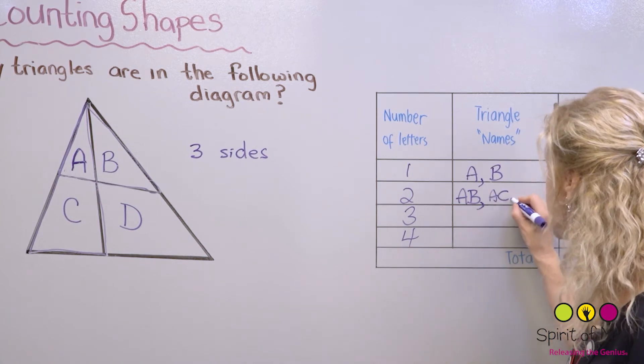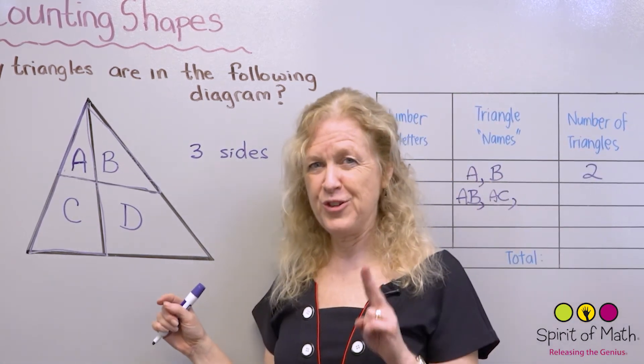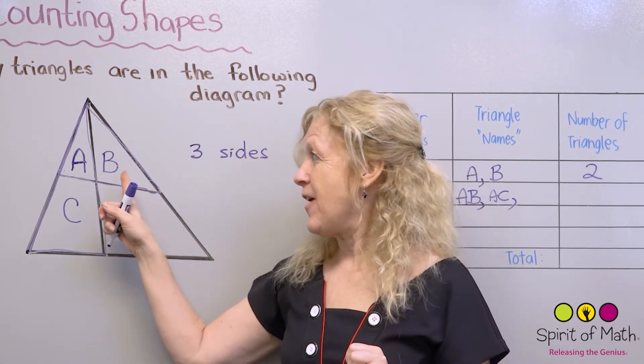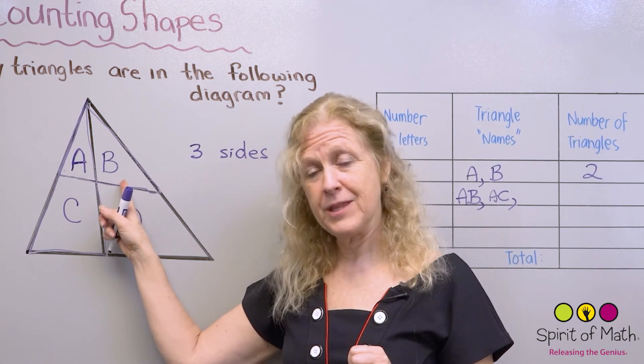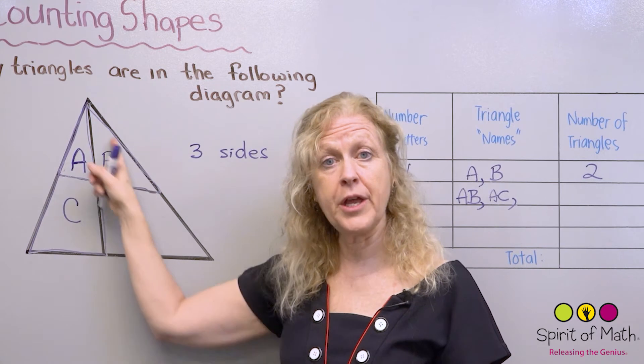Now let's see if another triangle can be made using A, the letter A. So with two letters. I already did AB, so let's try AC. Does that make a triangle on the outside? Don't look at this little line in here. On the outside you have one, two, three. Three sides? Yes, AC is a triangle. So you call that AC.